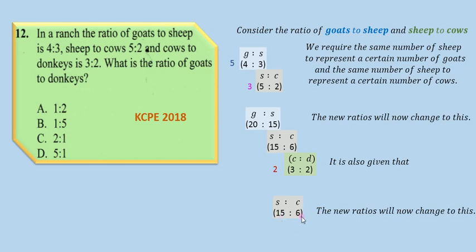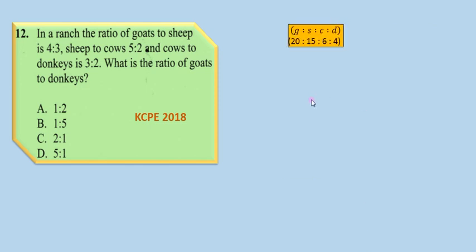The new ratio is now 15:6 for sheep to cows, and 6:4 for cows to donkeys. In other words, for every 6 cows you have 15 sheep, and for every 6 cows you have 4 donkeys. Taking all ratios together — goats to sheep to cows to donkeys — the combined ratio is 20:15:6:4.